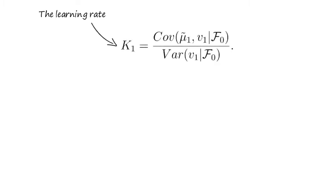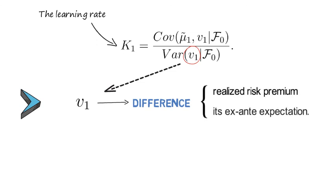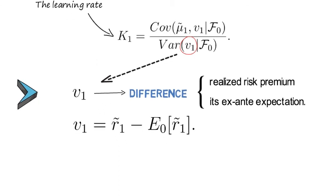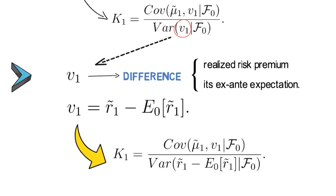The learning rate k1 is defined to be the covariance over the variance — meaning the optimal learning rate is the projection parameter that you obtain when projecting the ex-ante expected risk premium onto the realized measurement error. Note that nu1 is the difference between the realized risk premium and its ex-ante expectation. So we substitute in the next step nu1 in the variance operator with the following expression.